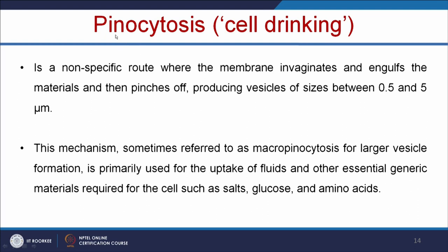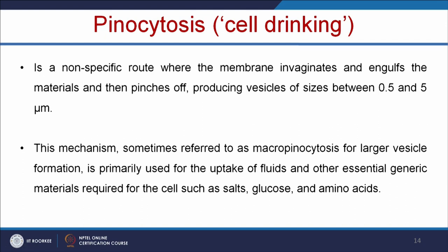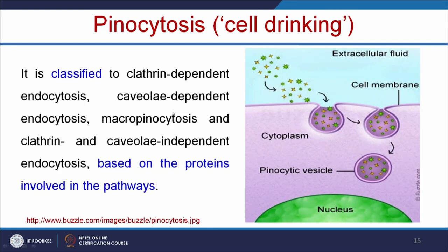Pinocytosis is called cell drinking. It is a nonspecific route where the membrane invaginates and engulfs materials, then pinches off producing vesicles of sizes between 0.5 and 5 micrometers. This mechanism is sometimes referred to as macropinocytosis for larger vesicle formation. It is primarily used for the uptake of fluids and essential materials required for cells such as salts, glucose, and amino acids. Foreign particles like nanoparticles can also be taken up by this pinocytosis process. Pinocytosis is further classified into clathrin-dependent, caveolae-dependent, macropinocytosis, or caveolae- and clathrin-independent, based on the proteins involved.